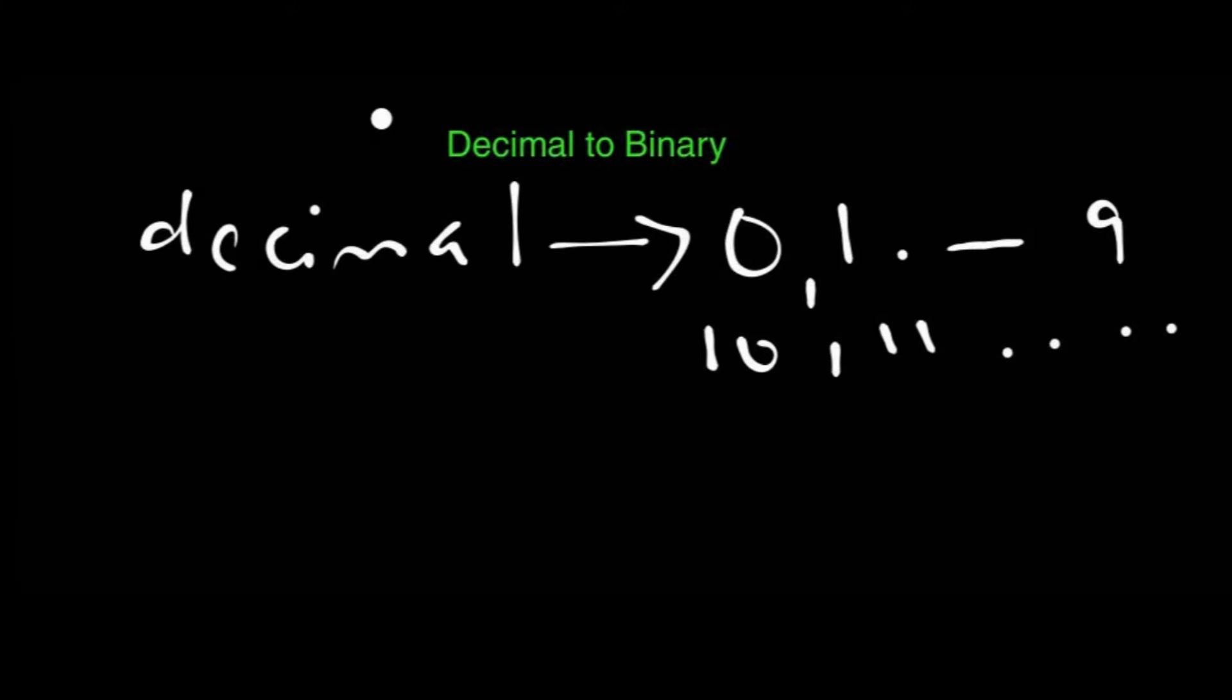So our number system is known as a base 10 number system. The base of a number system means the total number of basic symbols of that number system.